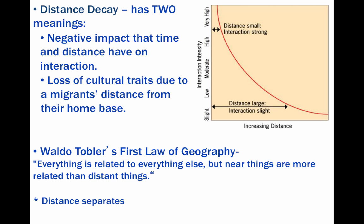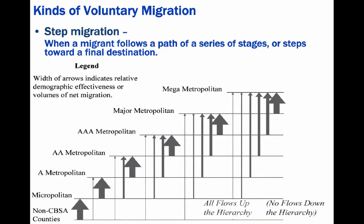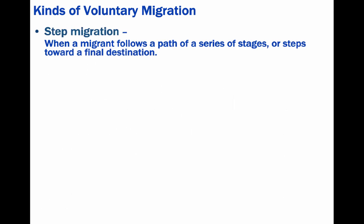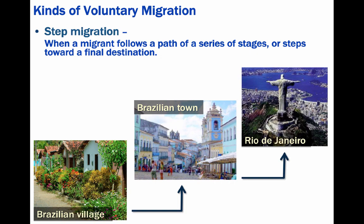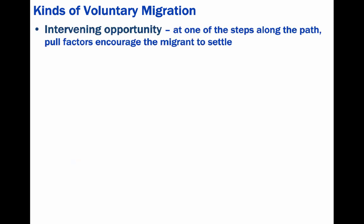To look at a couple types of voluntary migration, we can start with step migration, which is when a migrant follows a path of a series of stages or steps towards a final destination. This graphic shows a Ravenstein migration system where all net migration goes up from a smaller to a larger urban spectrum. For example, a peasant family in Brazil might move first to a village, then to a nearby town, later to a city, and finally to a metropolis such as São Paulo or Rio de Janeiro. At each stage, a new set of pull factors comes into play, and along the way many people may be captured by intervening opportunities.